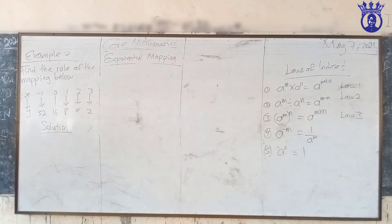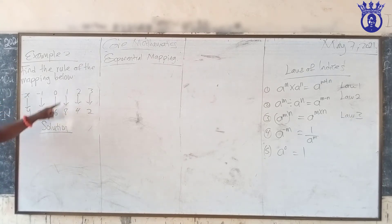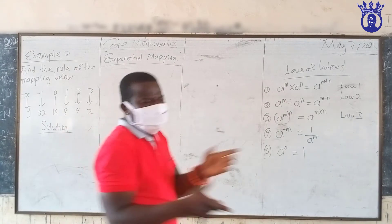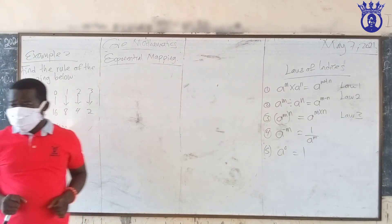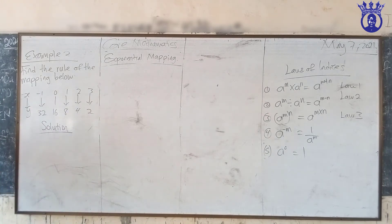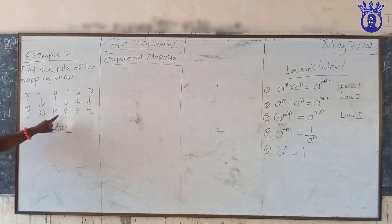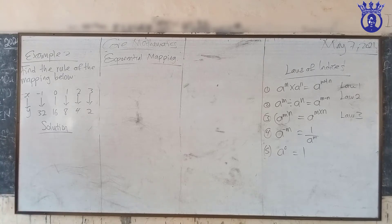Now let's look at Example 2: find the rule of the mapping where x maps to y as follows — negative one maps to 32, zero maps to 16, one maps to 8, two maps to 4, three maps to 2. Testing: 16 divided by 32, 8 divided by 16, 4 divided by 8, 2 divided by 4 — each gives one half. So R equals one half.